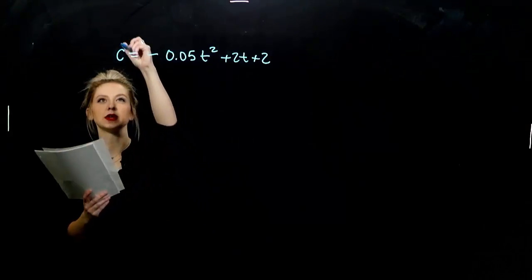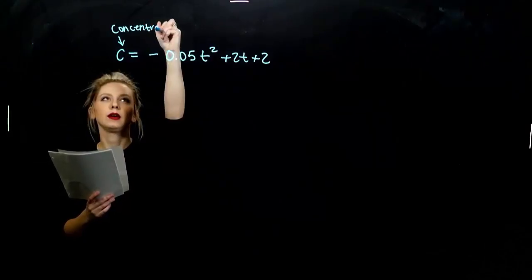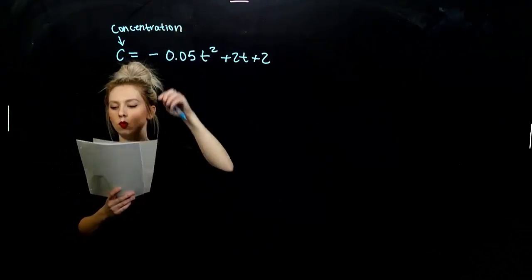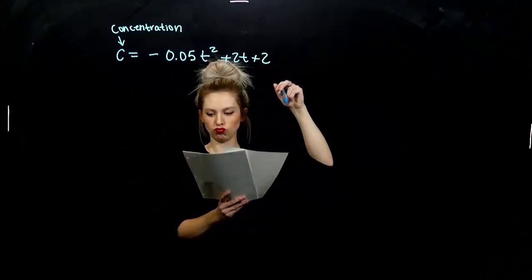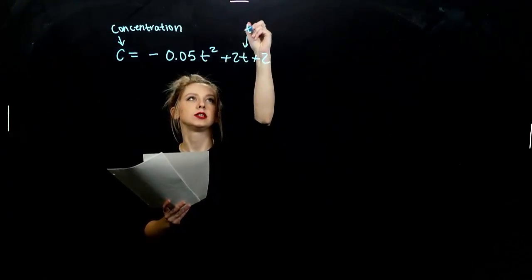So again, what do these pieces mean? C is our concentration and T is hours in the bloodstream. T hours.